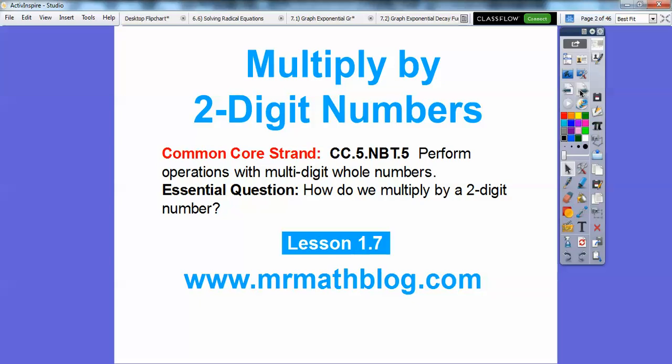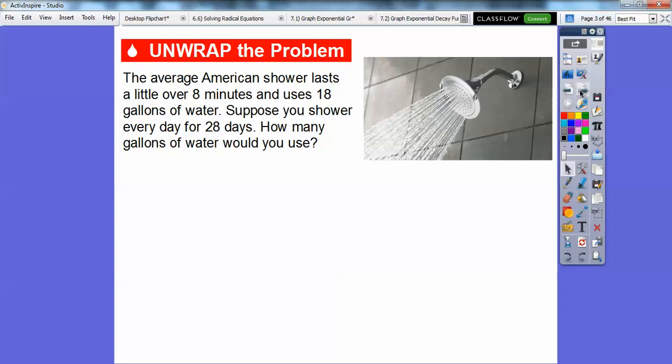Our question here is how do we multiply by a two-digit number? So we have a couple of examples here. The average American shower lasts a little over eight minutes and uses 18 gallons of water. Suppose you shower every day for 28 days. How many gallons of water would you use? Well, a whole bunch probably.